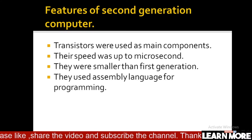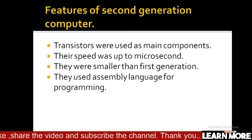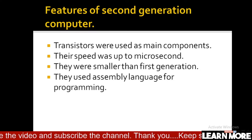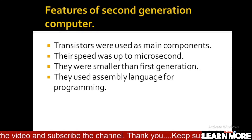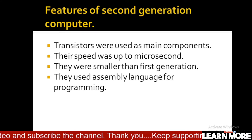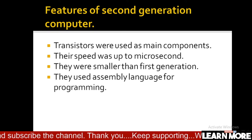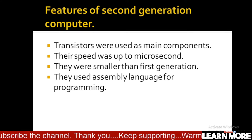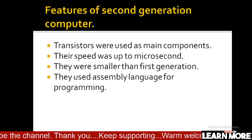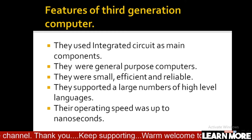Now moving to the features of second generation computer. Transistors were used as the main component. Their speed was up to microsecond, meaning they were quite faster than first generation computers. They were also smaller than first generation computers, and they used assembly language for programming, not machine level language.